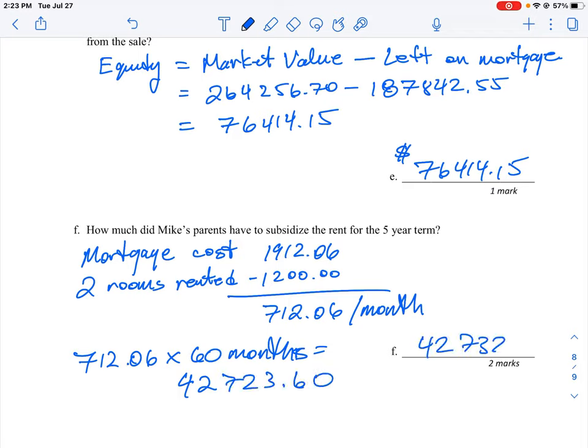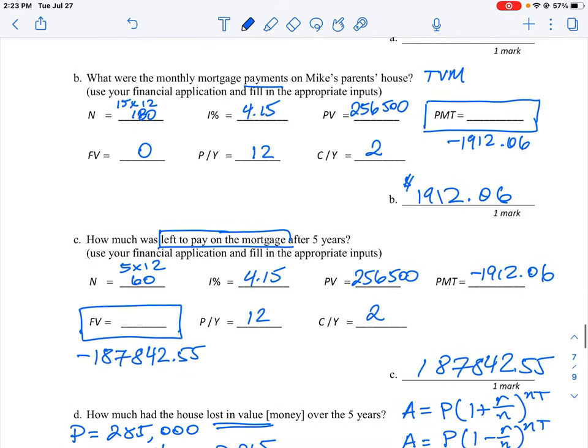So that's how much Mike's parents had to pay out over the course of five years, because we had a deficit every month of $712. That's how you work through this question. You really need the calculator, the TVM solver in order to make sense of these numbers. And the key there is to figure out what goes in each of those fields and those parameters. So try this out a few times, make sure that you understand how it works and how you key in those numbers, and then how you can generate those values.